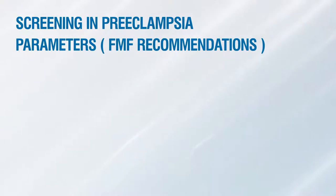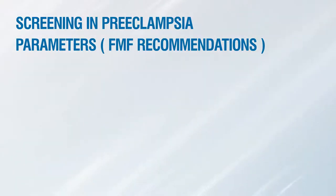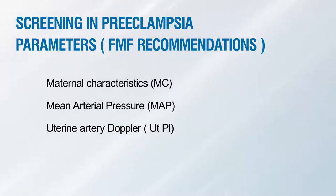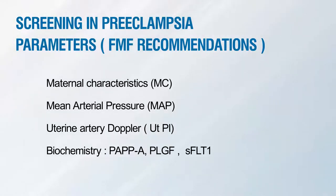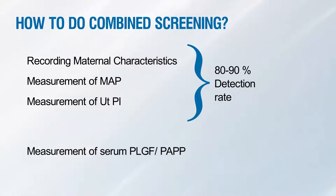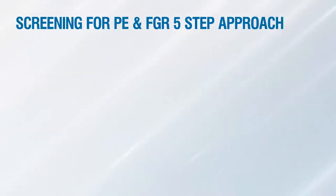As we do not have our own data and guidelines, we are following the Fetal Medicine Foundation guidelines with some changes. According to FMF recommendations, we have to take into account maternal characteristics, mean arterial pressure, uterine artery Doppler, and maternal biochemistry as markers. Using maternal characteristics, MAP, and uterine artery PI, the detection rate of preeclampsia is around 80 to 90 percent, while including maternal serum biochemistry increases it to 90 to 100 percent.